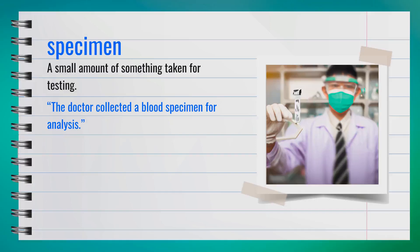The word specimen is a noun, spelled S-P-E-C-I-M-E-N. It refers to a small amount of something taken for testing. Pronounced 'specimen.' Another word for specimen could be sample. For example, the doctor collected a blood specimen for analysis. A specimen is a portion taken to test or examine something.